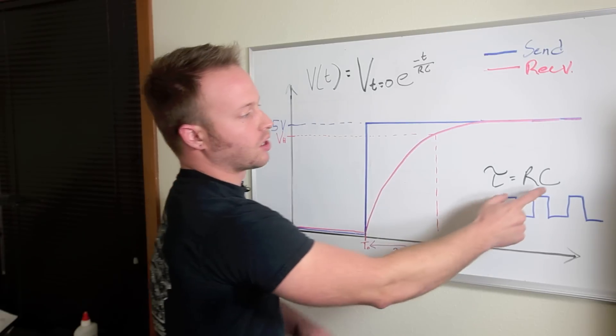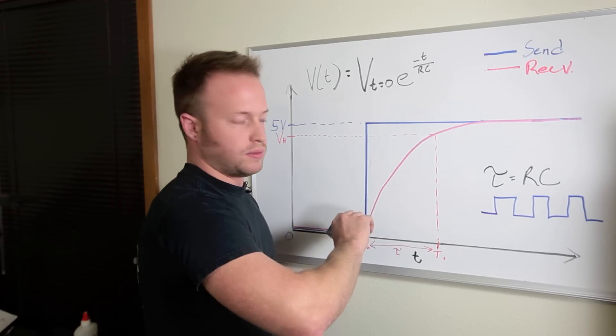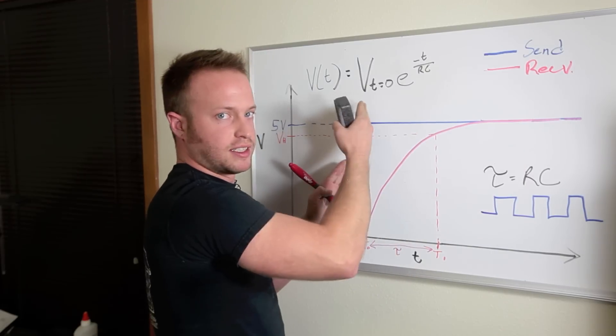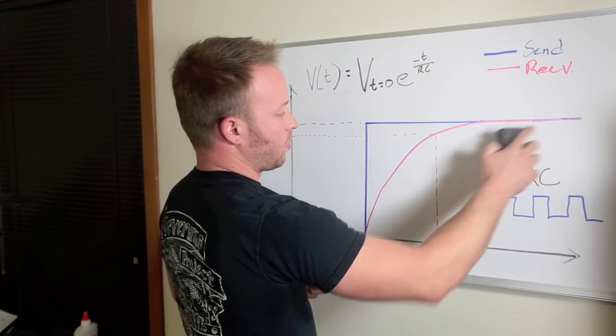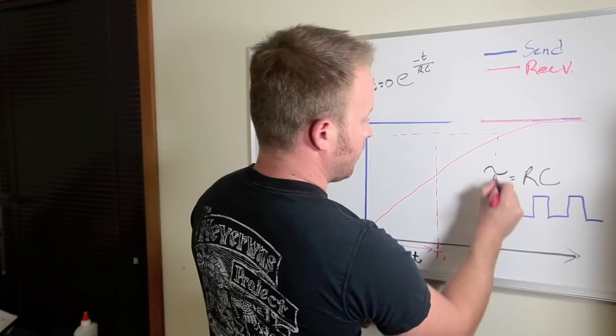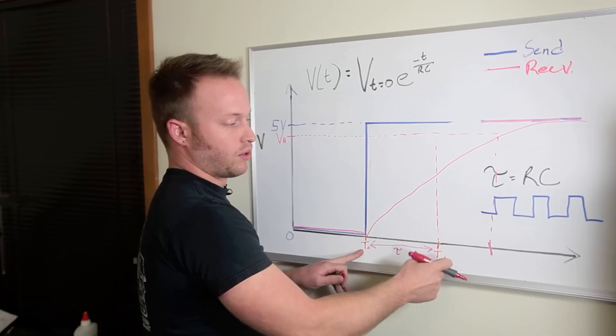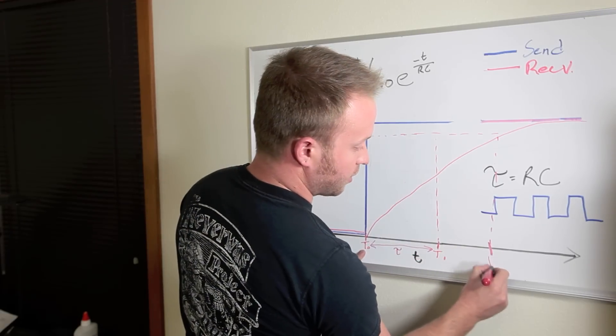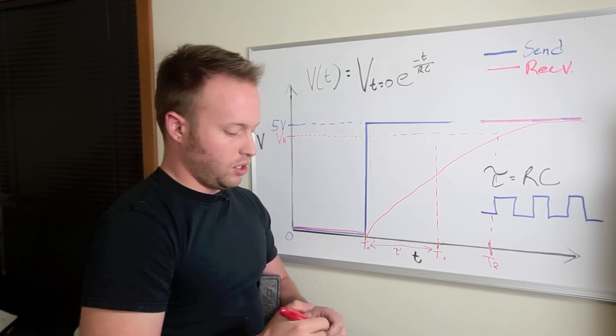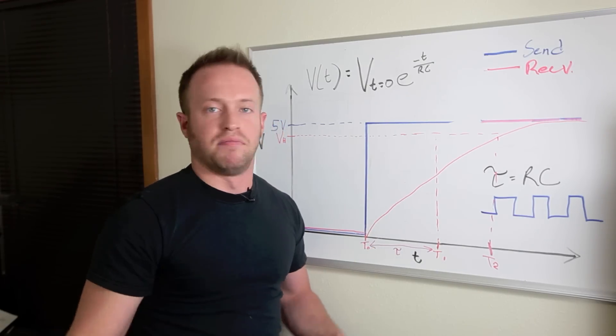When you touch the capacitor, you increase the capacitance. The resistance always stays the same, but you increase the capacitance, therefore increasing tau. So when you touch it, this curve stretches out. The send pin always sends the same voltage, but the curve stretches out. So now instead of quickly coming up this way, it rises slower and takes a longer time to hit that threshold voltage. So now instead of going from T0 to T1 and this value getting returned, it goes from T0 to let's call this T2 and this value gets returned. That's a larger value and in your code you can detect if this time has gone up, therefore detecting a change in capacitance and toggling a light.